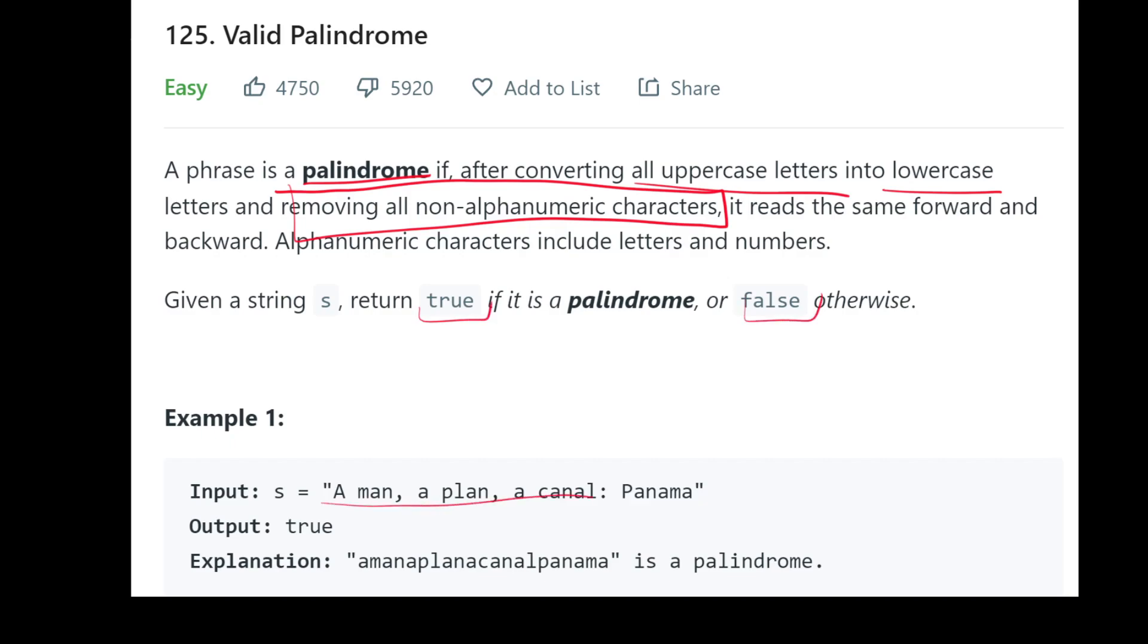So here we have a man, a plan, a canal, Panama. We're getting rid of all the spaces, all the colons, all the commas, and we're turning all the uppercase letters into lowercase letters, and we're just returning this one phrase, which we know to be a palindrome.